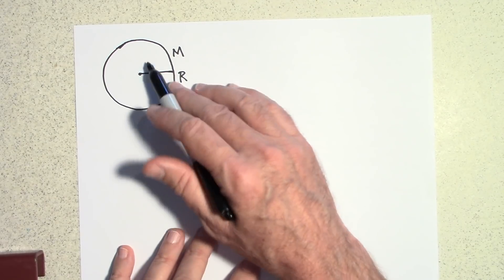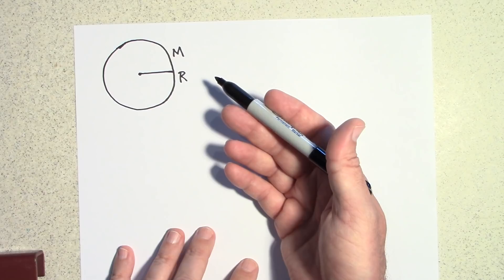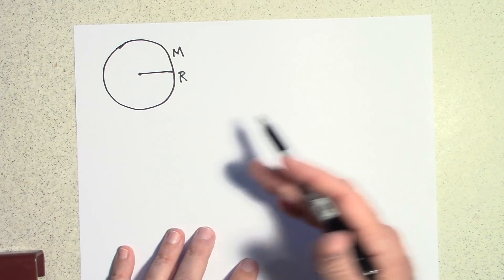But this is spread out and so we're going to have to figure out how do you handle a case where the mass isn't at a particular point but it's spread out.